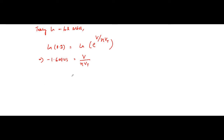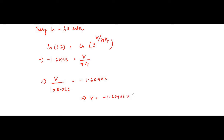Now substituting the values: V is what we need to calculate, eta = 1, and Vt = 26 mV = 0.026 V. So V / (1 × 0.026) = −1.60943, which implies V = −1.60943 × 0.026 ≈ −0.0418 V. We can write it as approximately minus 0.042 volt.